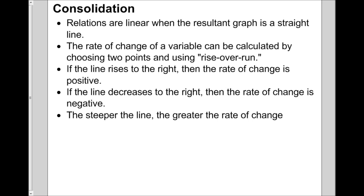Let's sum up what we've done today. Relations are linear when the graph is a straight line. The rate of change of a variable can be calculated by choosing two points and using rise over run. Make sure you understand the success criteria. If the line goes up or rises to the right, the rate of change is positive. If the line is decreasing, the rate has to be negative. And as we saw with Mario versus Luigi, the steeper the line, the greater the rate of change. Hopefully this video taught you how to understand and calculate rate of change. Thanks for watching.